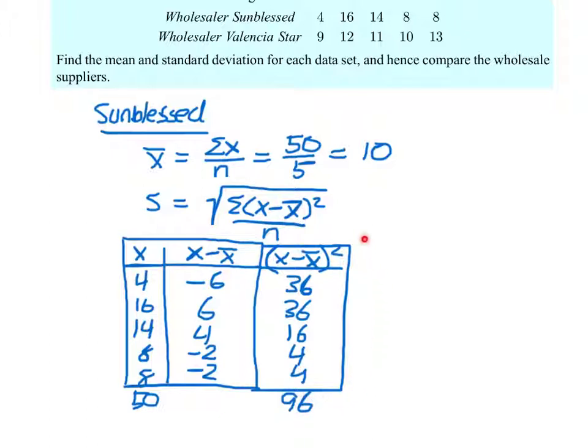And so that number goes up here. This is the sum of the squares of the deviations, which is the numerator of our expression. So standard deviation now becomes the square root of 96 over the sample size, which is 5. And if we plug that in our calculator, we get approximately 4.38. So the mean of the data points for Sunblessed is 10, and the standard deviation for the Sunblessed samples is 4.38.